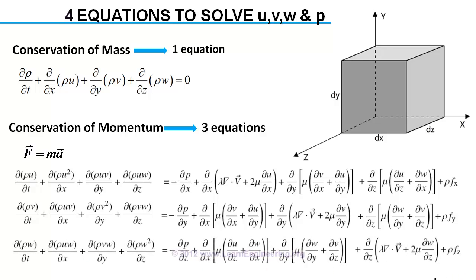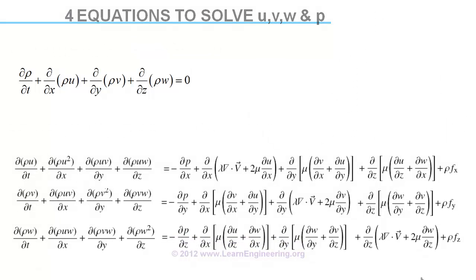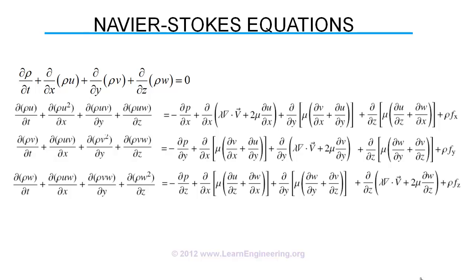So in total you have got four equations. All these equations together are known as the famous Navier-Stokes equations. And if you can solve these four equations, you can find out the four unknowns.